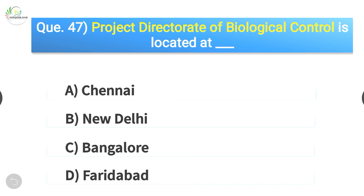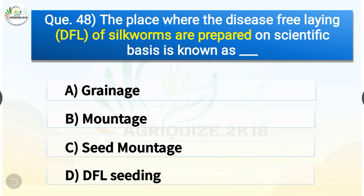Question number forty-eight: The place where disease-free layings of silkworms are prepared on a scientific basis is known as what? The options are: grainage, mountage, seed mountage, or DFL seedling. The correct answer is option A — grainage. The place where disease-free layings of silkworms are prepared on a scientific basis is known as grainage.